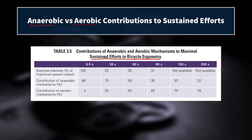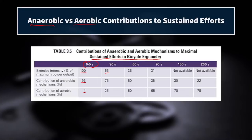When we look at exercise intensity from 0 to 5 seconds, you can go at 100% intensity and the contribution of the anaerobic system will be very high — 96%. The aerobic system will only contribute about 4%. As we extend that sustained effort out to 30 seconds, you can really only sustain 55% of your max power output for the whole 30 seconds, and now we're shifting to 75% anaerobic and 25% aerobic.